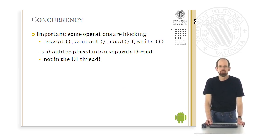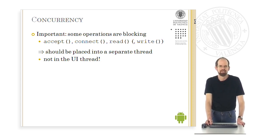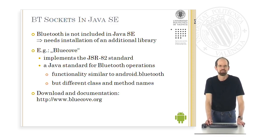It is important to note that some of these operations are blocking. Accept, connect, and read are blocking operations, and in some cases write is also blocking. Therefore, these should be placed into a separate thread — not in the UI thread itself — to avoid freezing of the graphical user interface.